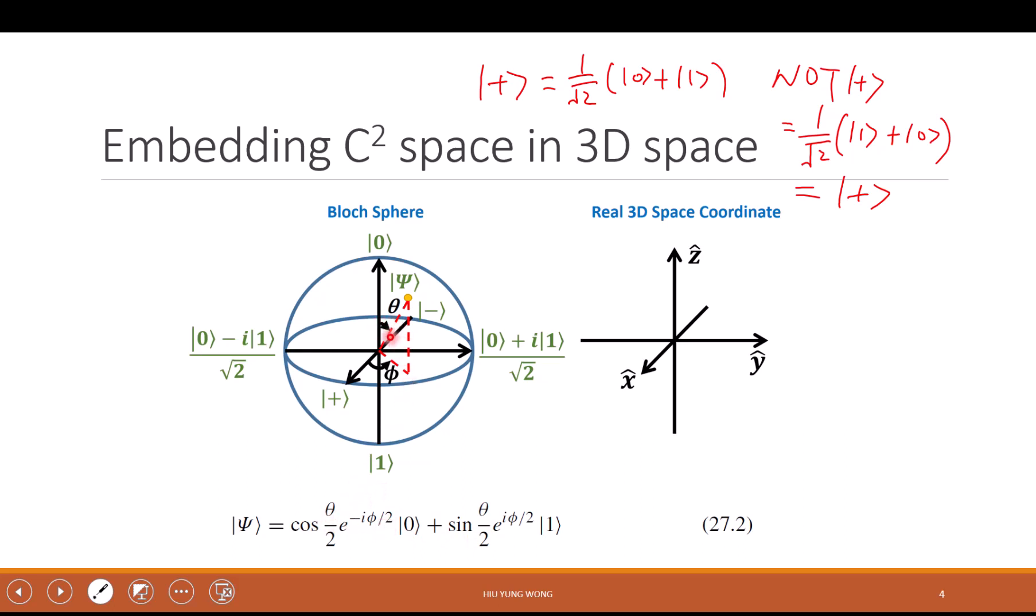Theta turns out to be the polar angle of this Bloch sphere and phi is the azimuthal angle. Again, I told you to be careful not to use the Bloch sphere to find the gates you want without considering the general state.